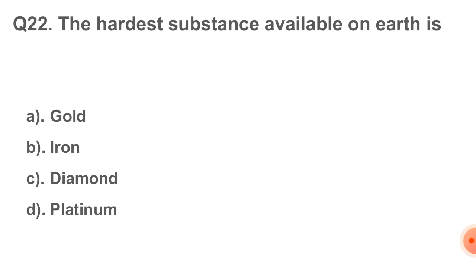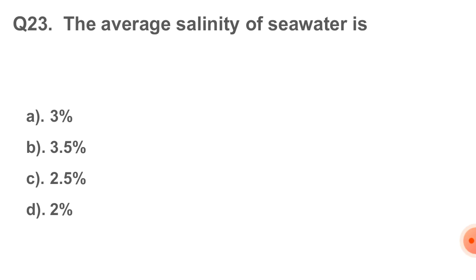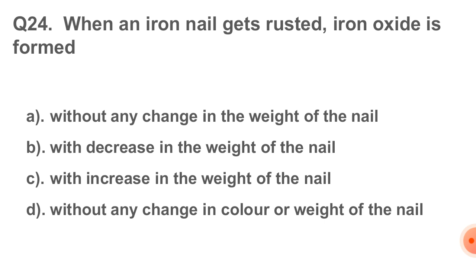Question number 22: the hardest substance available on earth is. The correct answer is option number C, that is diamond. Question number 23: the average salinity of seawater is. The correct answer is option number B, that is 3.5%. Question number 24: when an iron nail gets rusted, iron oxide is formed. The correct answer is option number C — there is an increase in the weight of the nail.